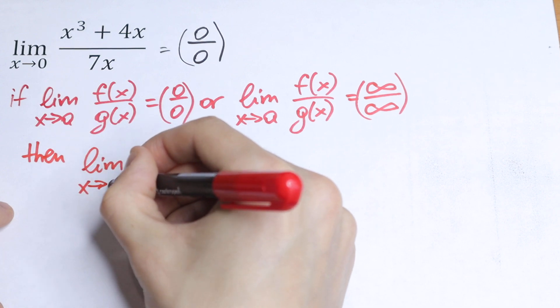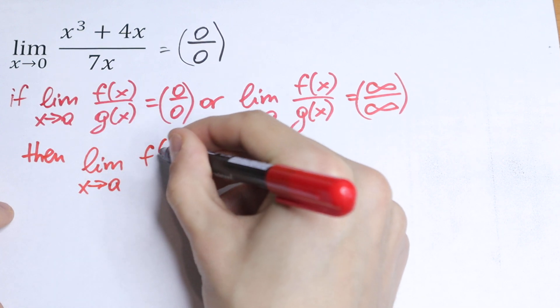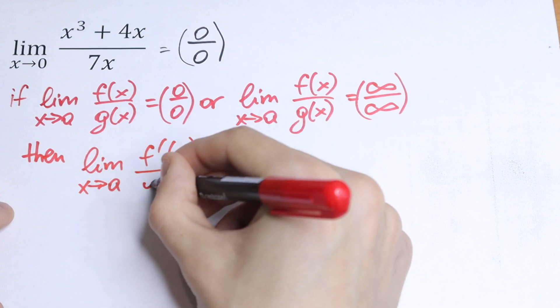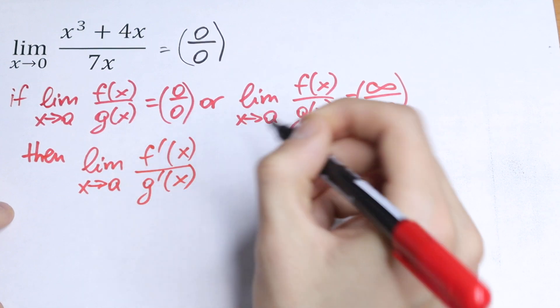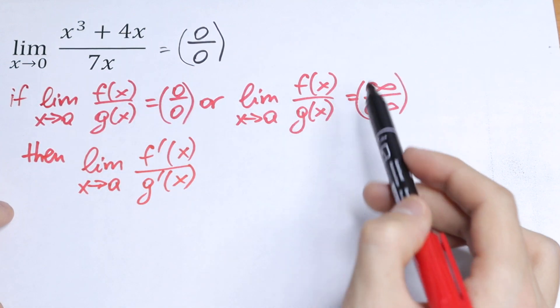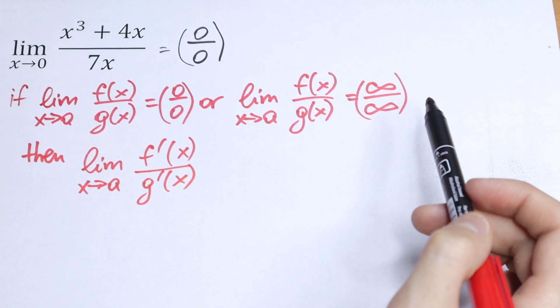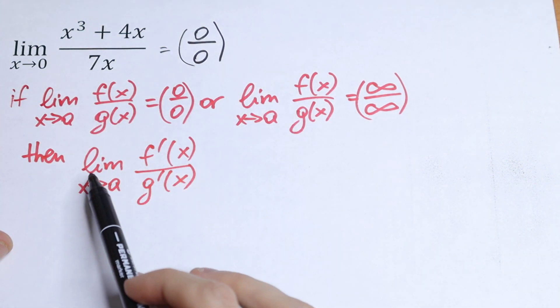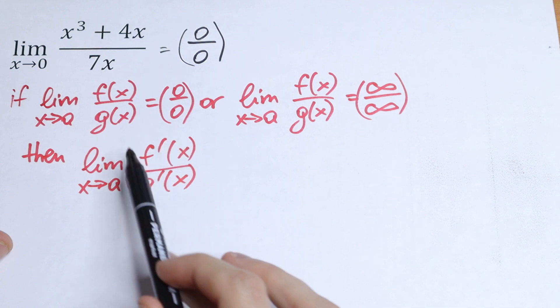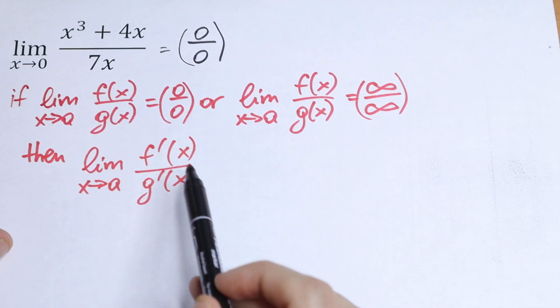Then we apply L'Hopital's rule: limit as x approaches to a, we have f prime over g prime. If we have 0 over 0 or infinity over infinity, then we can find derivative from our numerator and derivative from our denominator.